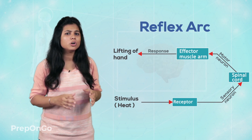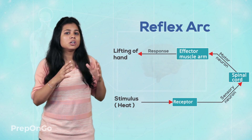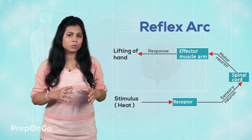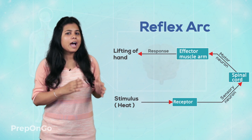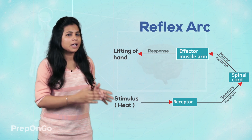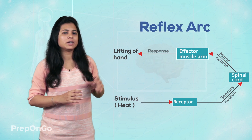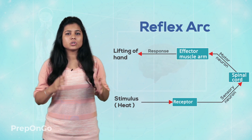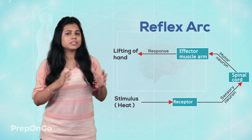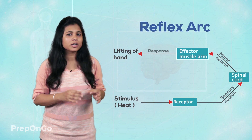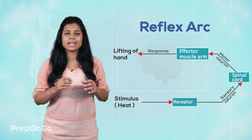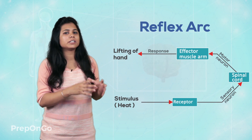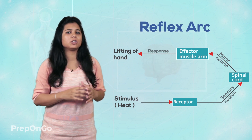So this is the reflex action — the withdrawal of the hand as soon as you touch a hot object — and the pathway followed by the reflex action is called the reflex arc. We have seen that the reflex arc involves the motor neurons and the sensory neurons, which are directly connected at the spinal cord.